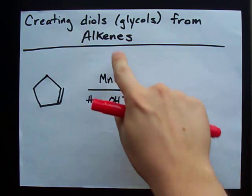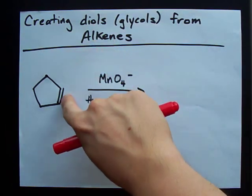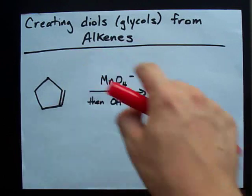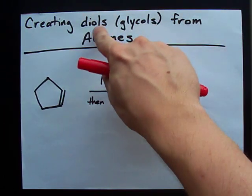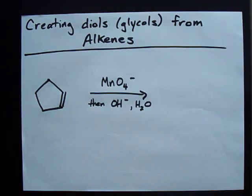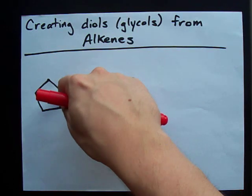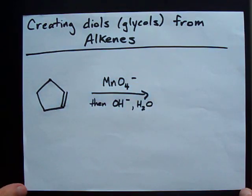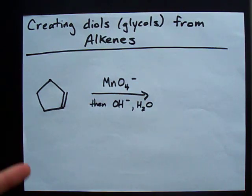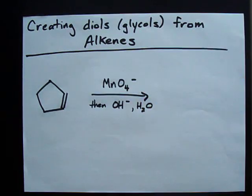How do you turn an alkene, a molecule with two carbons double bonded to each other, into a diol? That is, how do you add an OH to each of the carbons involved with the double bond? Well, one way is to use permanganate solutions.